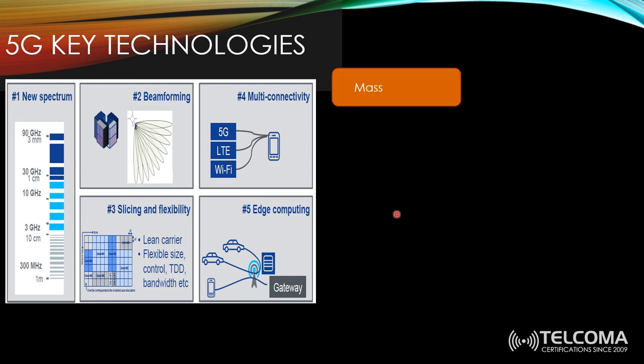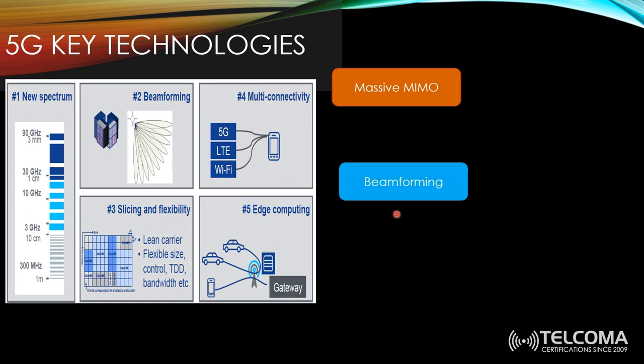Massive MIMO is one of the main technologies that 5G depends on. Under massive MIMO there are two key technologies: beamforming, where you can dedicate your beams either horizontally or vertically to get enhanced deep coverage with very narrow beams — enhancing both coverage and capacity — and spatial multiplexing.